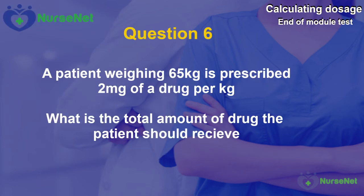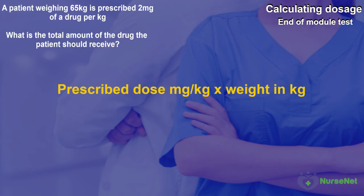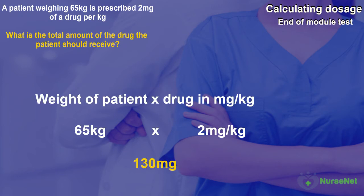Question 6. A patient weighing 65kg is prescribed 2mg of a drug per kilogram. What is the total amount of the drug the patient should receive? This is a fairly straightforward calculation. We multiply the weight of the patient by the drug in mg per kilogram. Since the patient weighs 65kg we multiply that by 2mg per kilogram, which gives us our answer of 130mg.